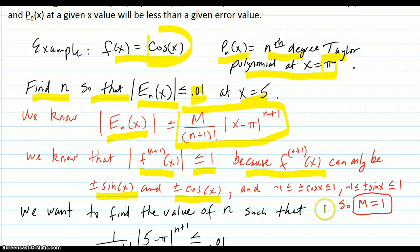So all their values, no matter what x is, travel between negative 1 and 1. So the maximum value on any interval and specifically at x equals 5 is going to be m equals 1.